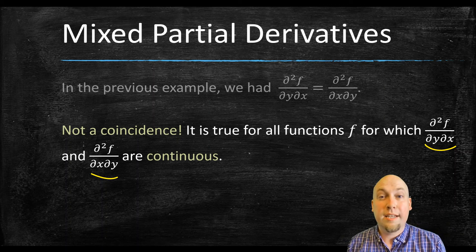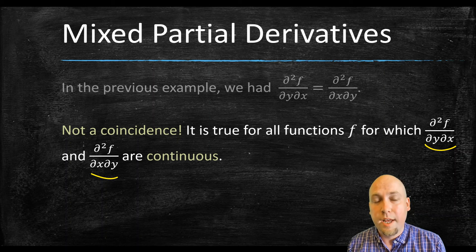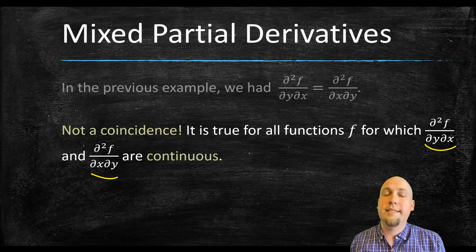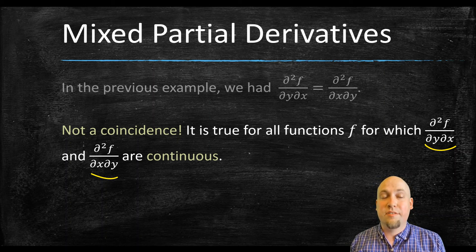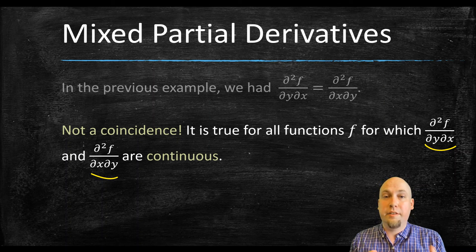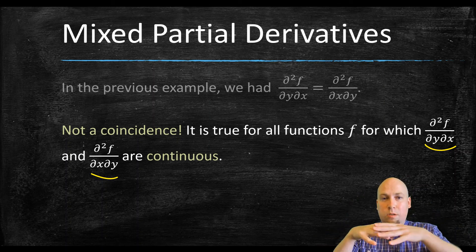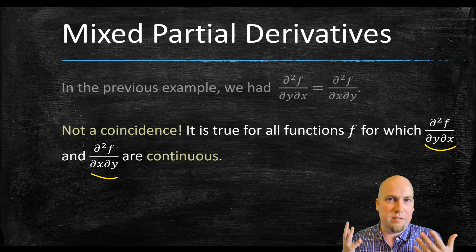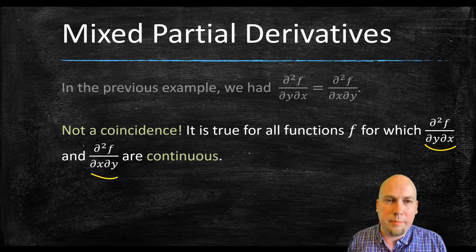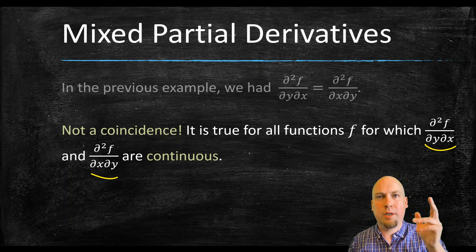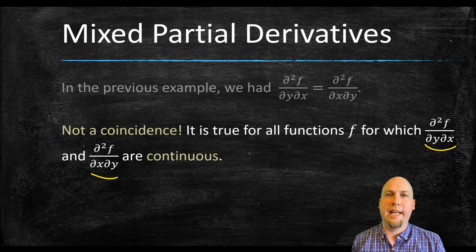That wraps up our discussion of second partial derivatives. Next class we're going to use these second partial derivatives to classify critical points as either minimums, maximums, or saddle points — those critical points that are neither mins nor maxes. See you then.